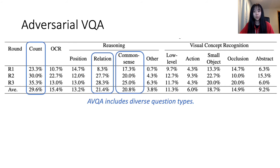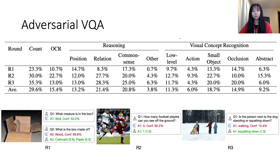Our adversarial VQA benchmark includes diverse question types: questions about counting objects, questions requiring scene text recognition, different types of reasoning questions, and questions focusing on visual concept recognition. Analysis shows that state-of-the-art VQA models are especially vulnerable at counting, relation reasoning, and common sense reasoning. Visualization of adversarial questions shows its high quality, and we hope to provide a dynamically evolving benchmark as future models become stronger.